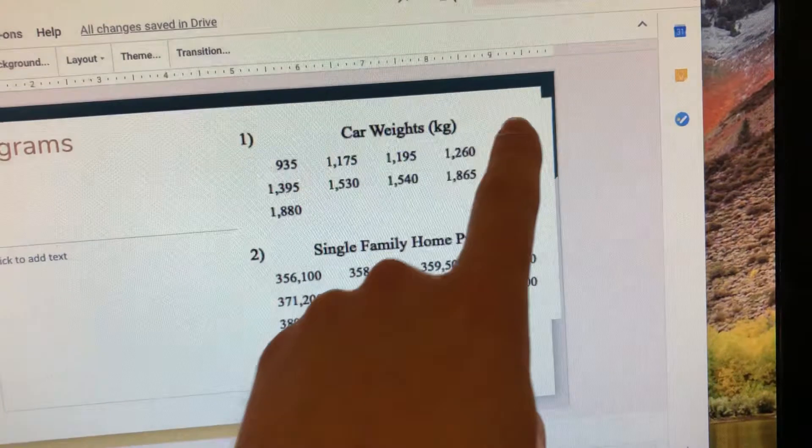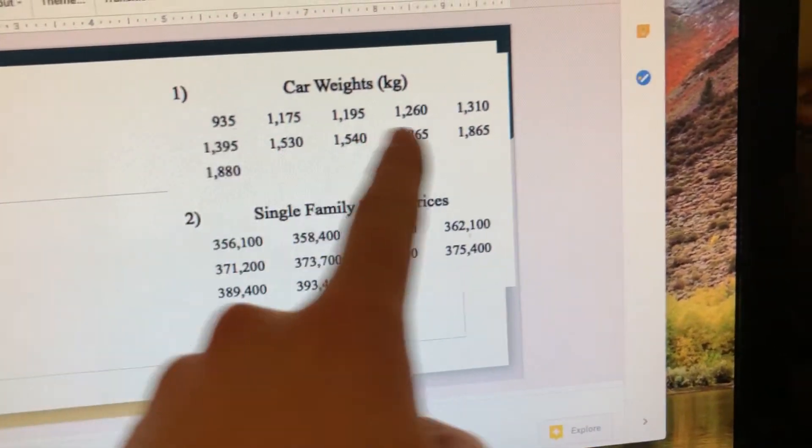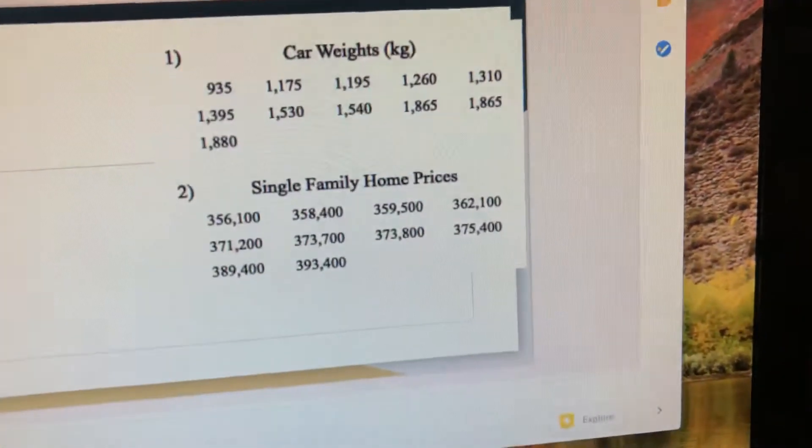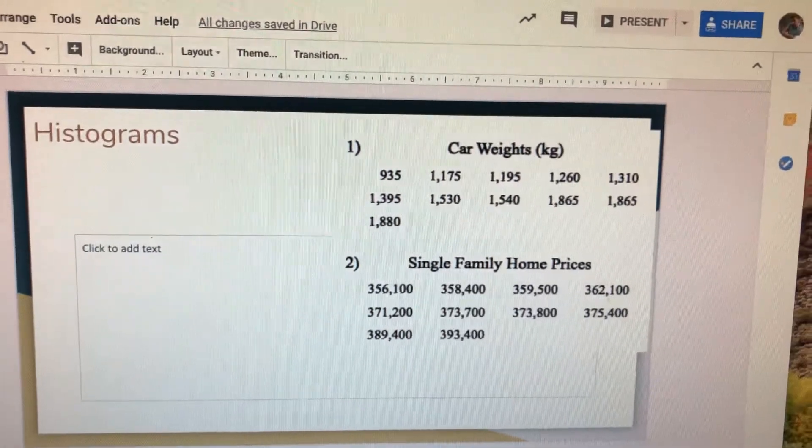A bar graph would have a section for all 11 cars, and they would go up to how much that car weighs. A histogram is going to sort of take all that data and make it a little bit more general.